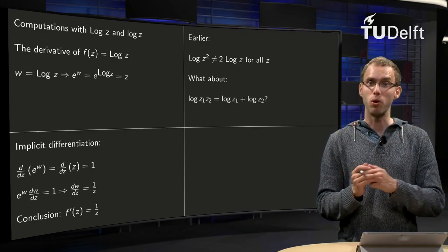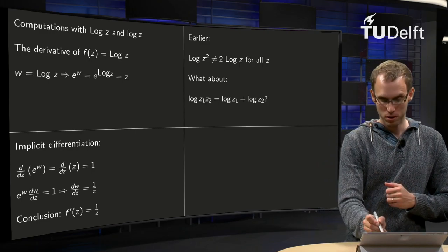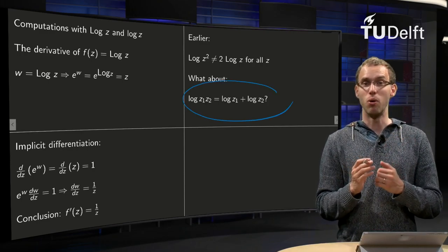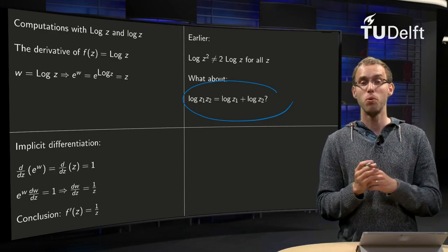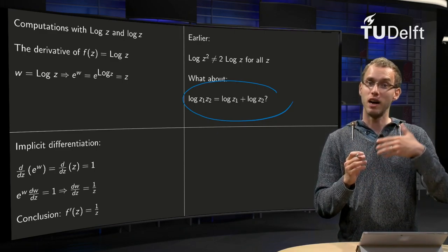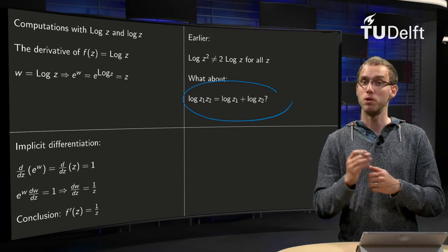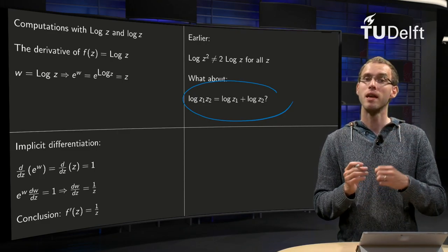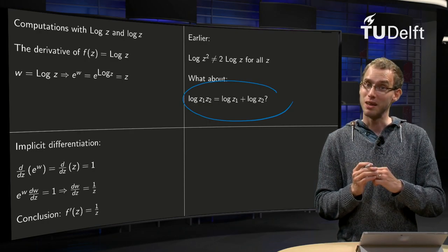What about the small log of z? So what about this statement: does that still hold if you replace the capital by a small log? So small log of z1 times z2, can I rewrite it as small log of z1 plus small log of z2? We have to use the definition for that.